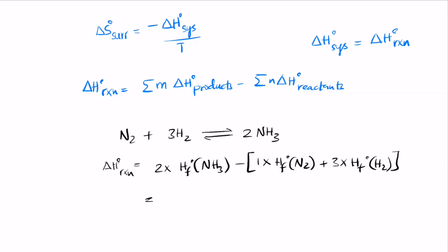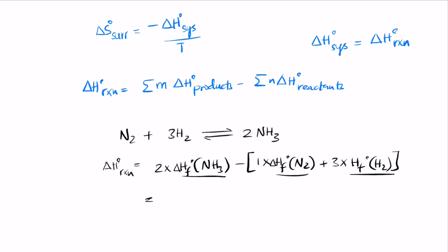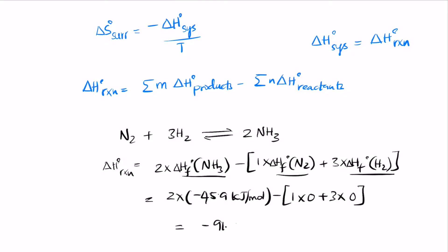These values can be found at the end of the textbook in the appendix tables. These are delta Hf, the enthalpy of formation. So this becomes 2 times minus 45.9 kilojoules per mole for NH3, and for N2 it is 0, plus 3 times H2, which is also 0. This gives a value of minus 91.8 kilojoules. So this is delta H of the reaction.